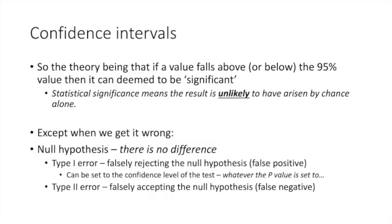The theory is that if a value falls above or below the 95% threshold it can be deemed significant — meaning it is very unlikely to have arisen by chance alone. But that unlikelihood means we can still make a mistake, and that's where we get type 1 and type 2 errors.